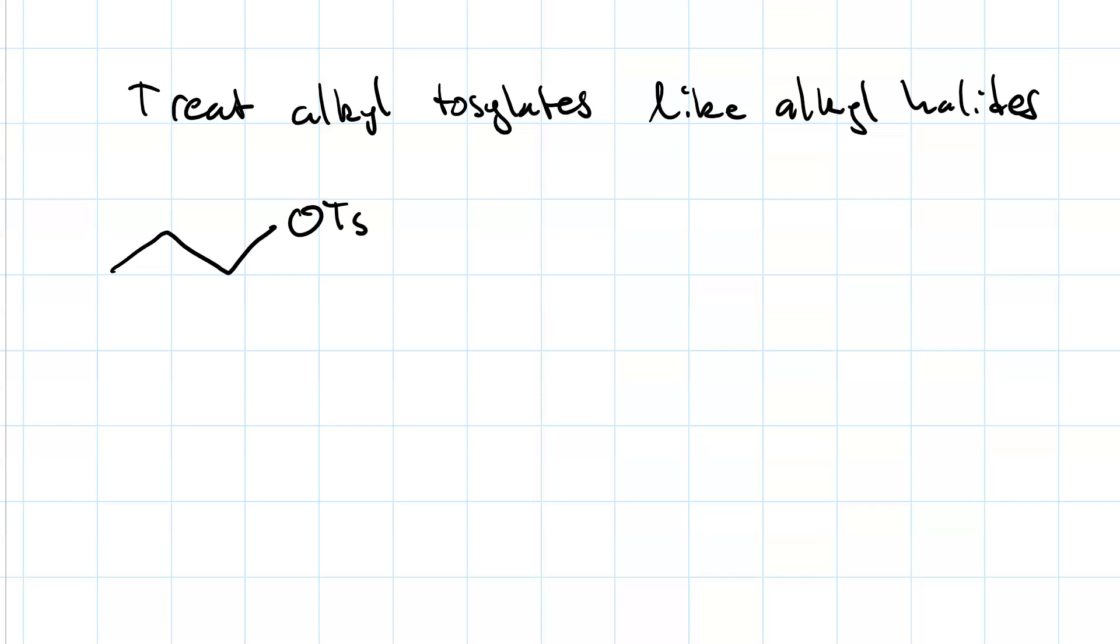A primary alkyl tosylate, treated with sodium hydroxide, goes SN2. It takes us back to a primary alcohol.